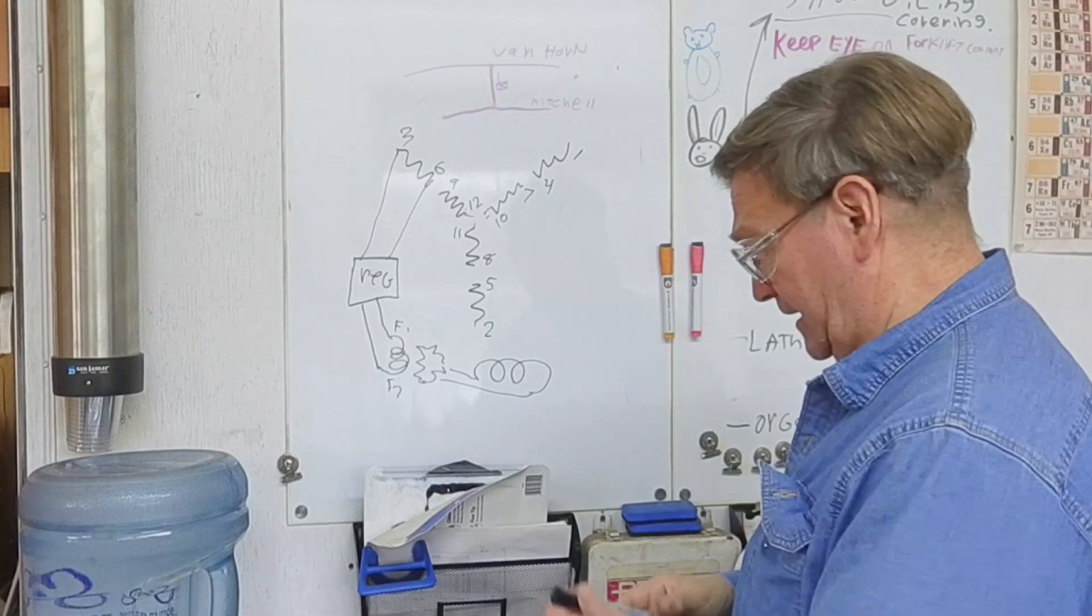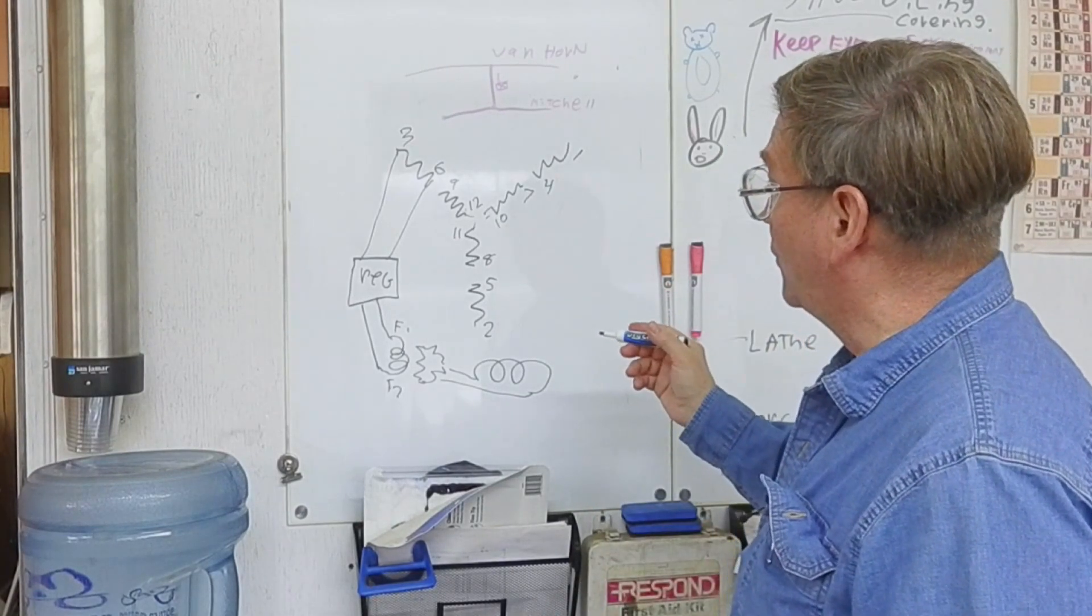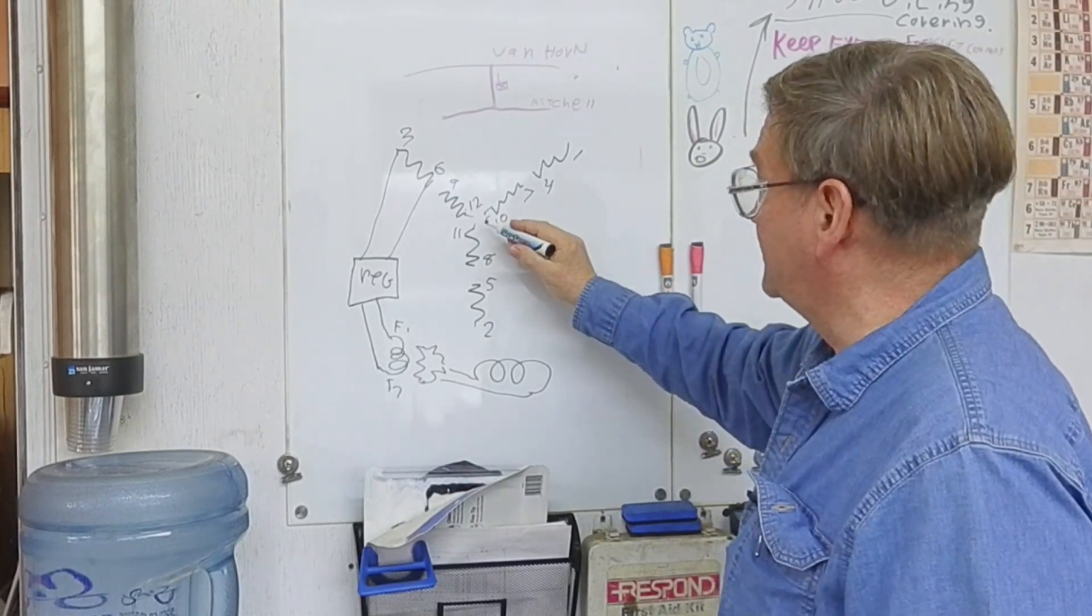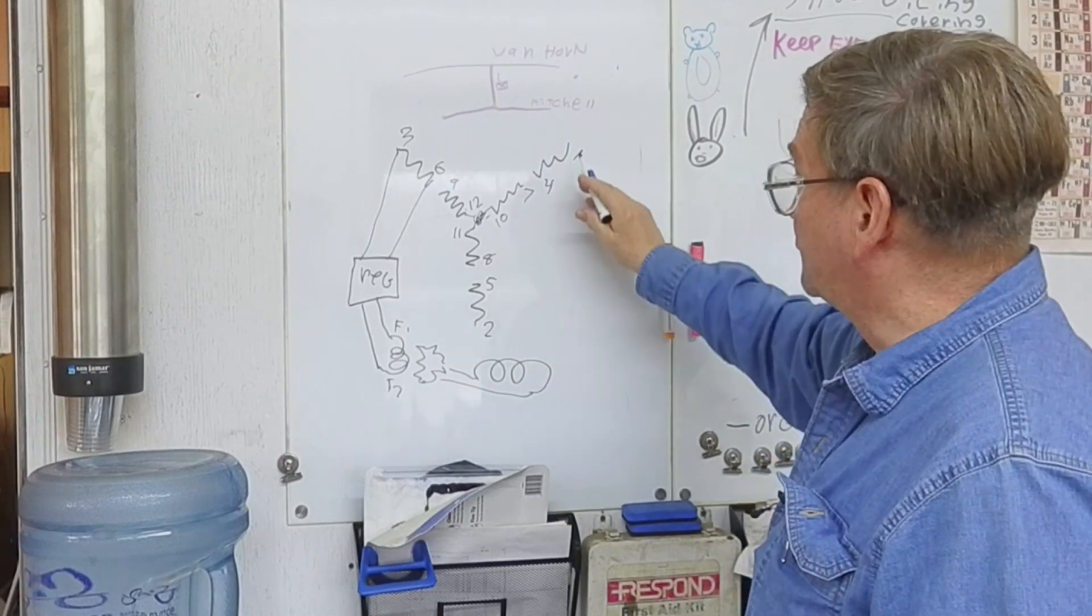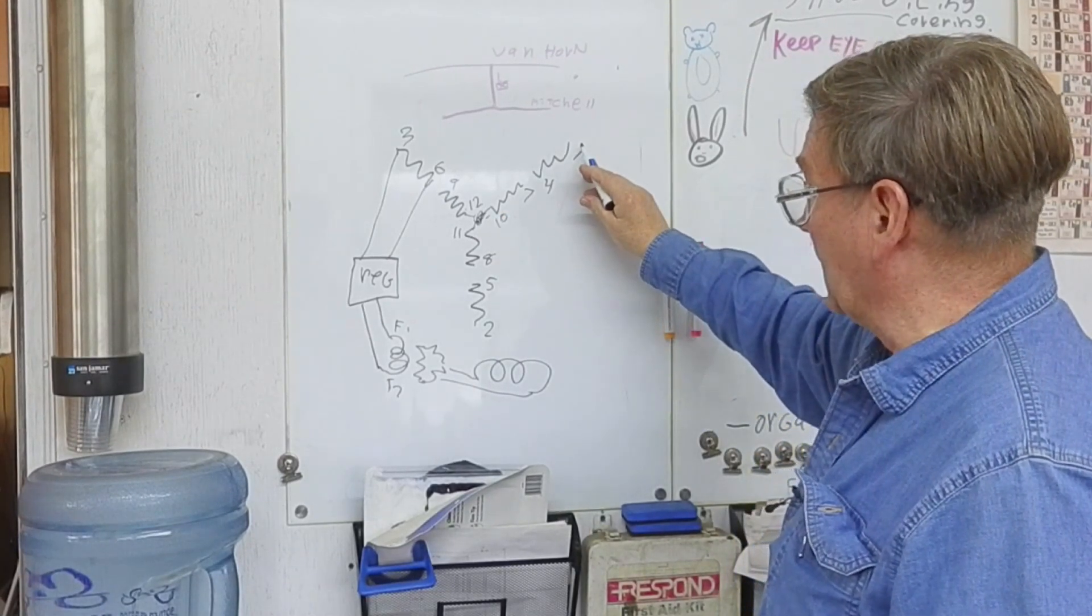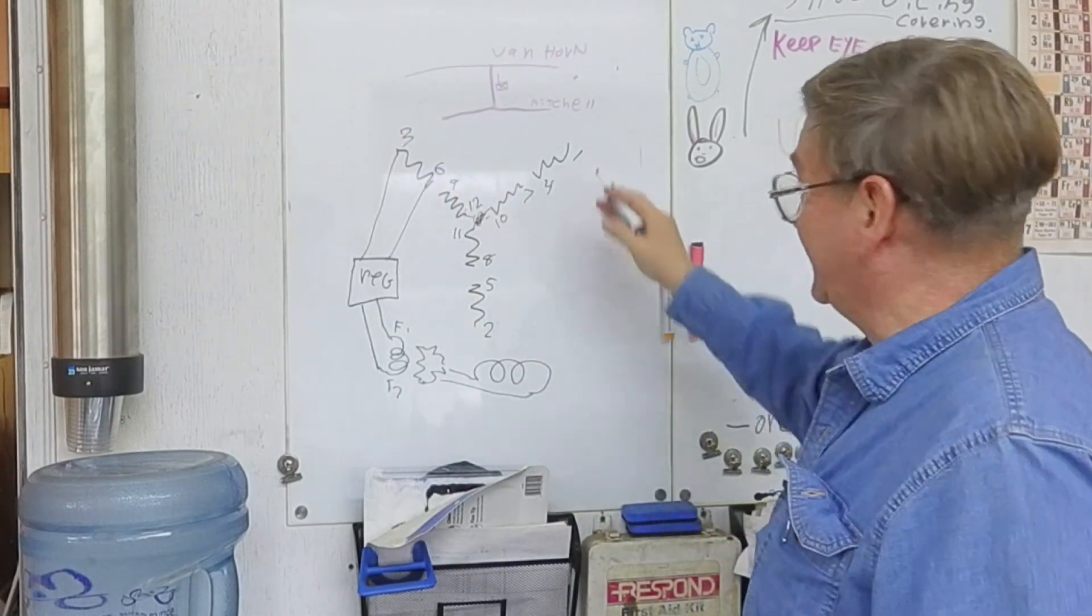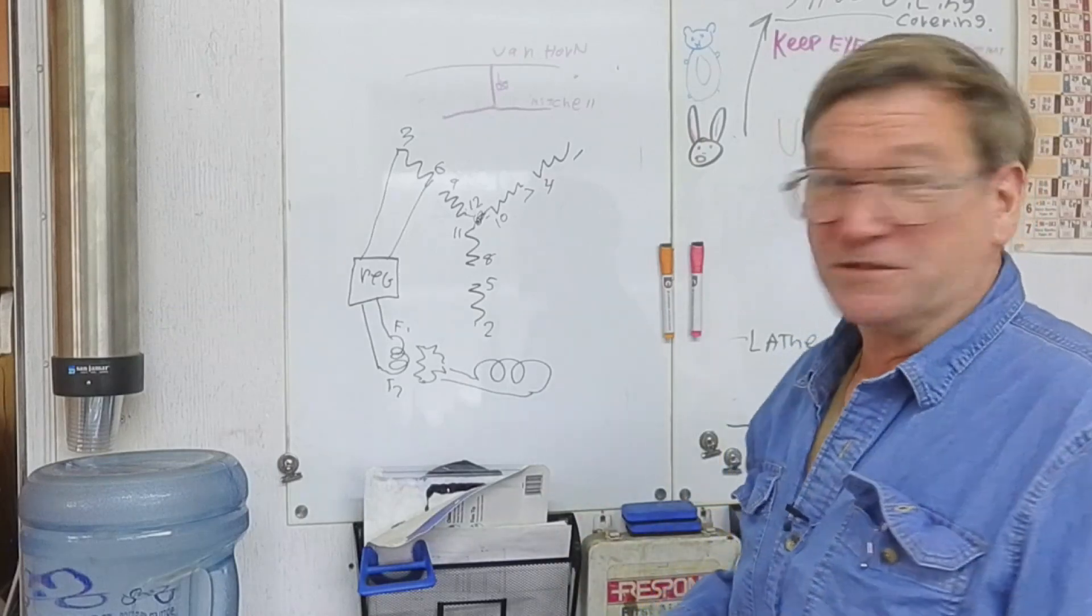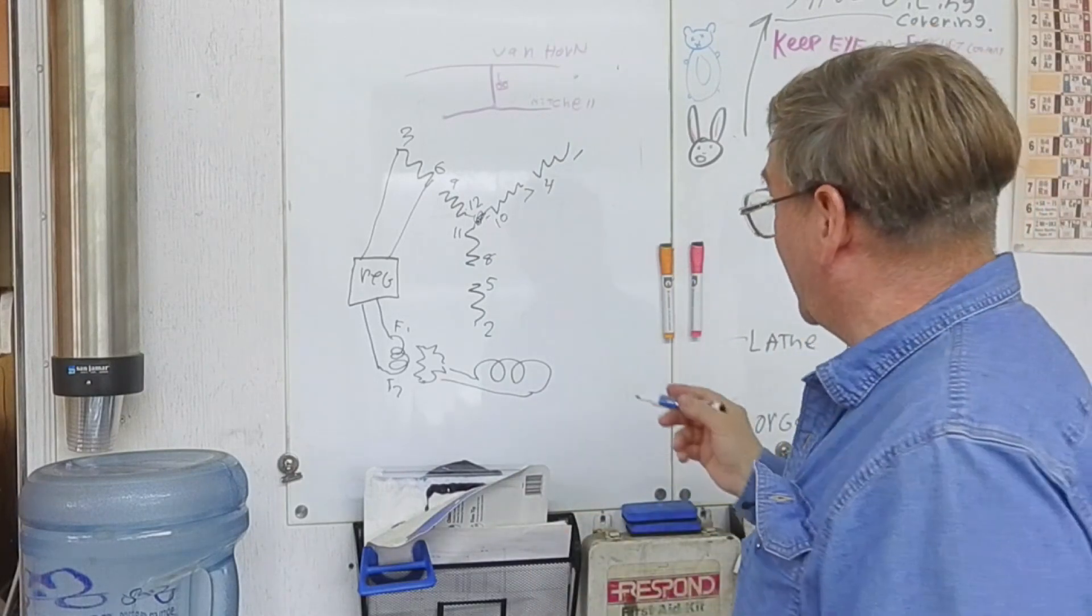If we're running a generator or motor, let's say we're running a generator and it's 480 volts. So we tie all of these together. You traditionally put your lines on one, two, and three. These are T numbers, which would be terminal number. And then you go L for your lines, but you just normally go one, two, and three. So that you keep the numbers the same going into your line.